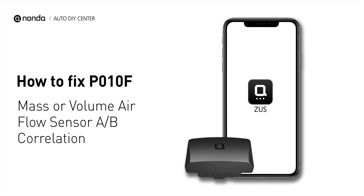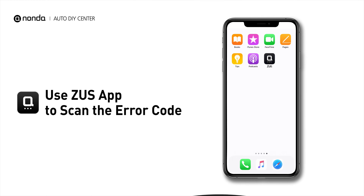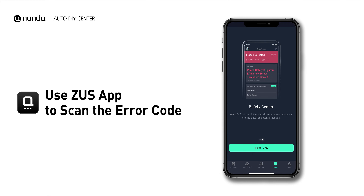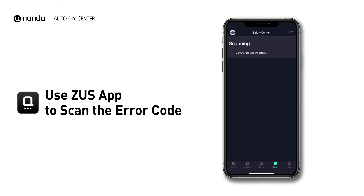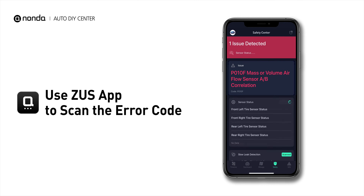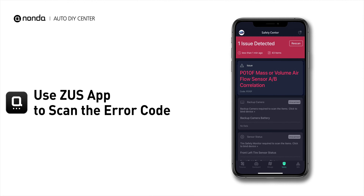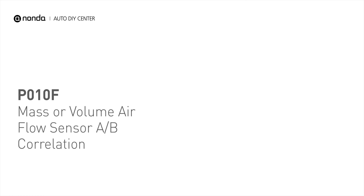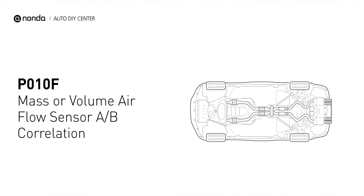If you are getting a P010F error code, this video is going to show you one practical solution to fix the error code at home. Use the Zeus app to scan your vehicle and see the error code P010F. It means that the powertrain control module has detected a malfunction with the mass airflow system.